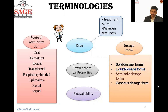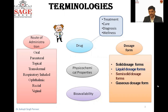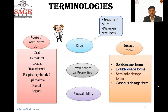What is a drug? A drug is a chemical substance which provides treatment, cure, diagnosis, or wellness — it is used for the treatment, cure, diagnosis, or wellness of a patient. What is a dosage form? There are various forms in which we can deliver a drug into the body, such as solid, liquid, semi-solid, and gaseous forms. These are called dosage forms.